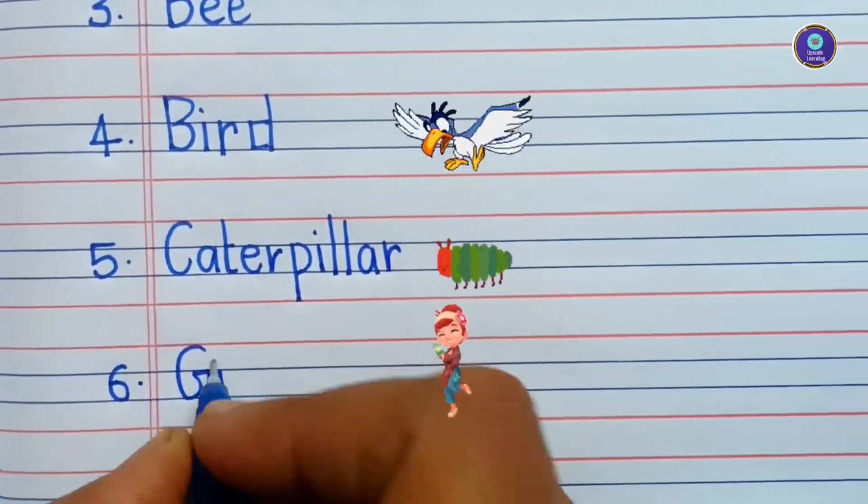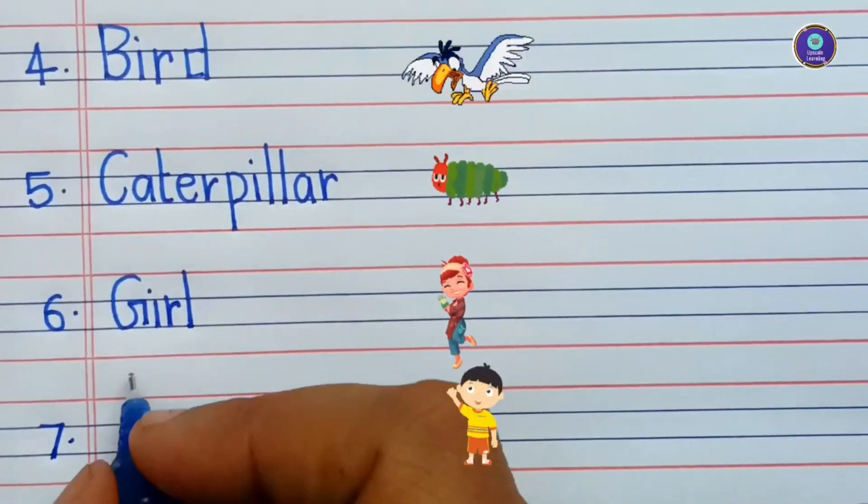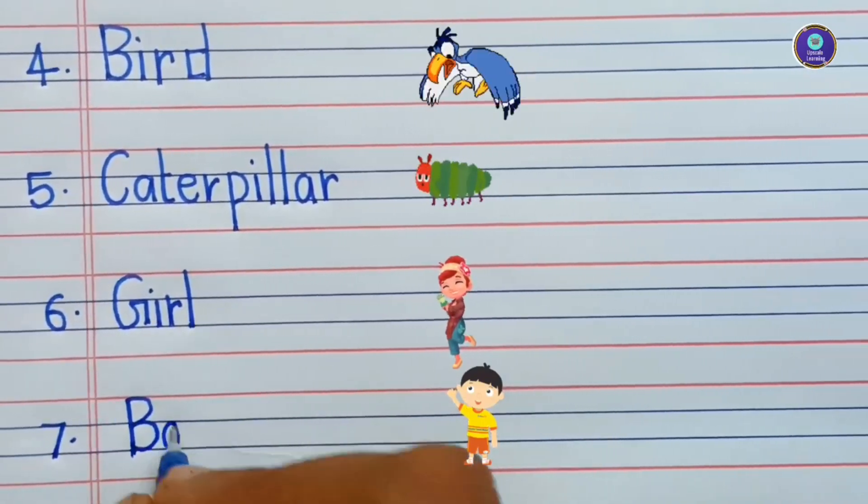Sixth one is girl. G-I-R-L, girl. Seventh one is boy. B-O-Y, boy.